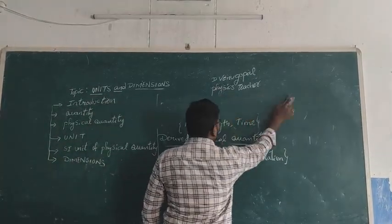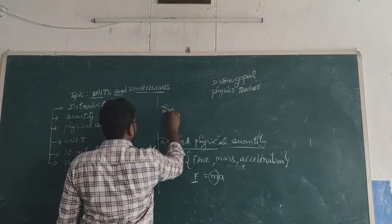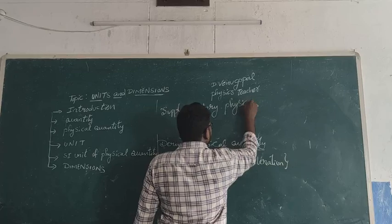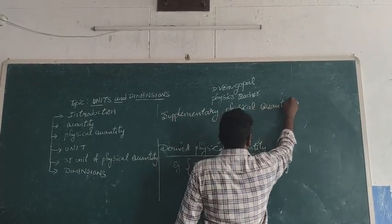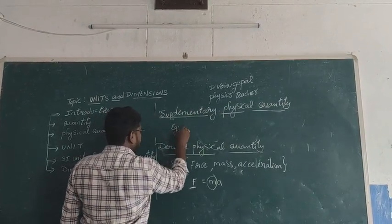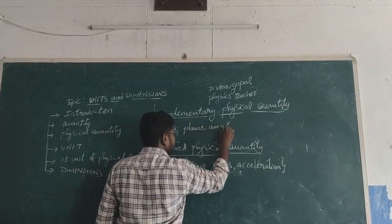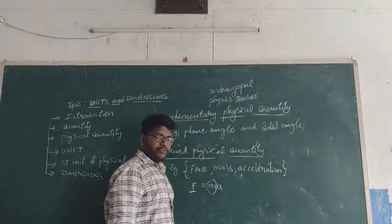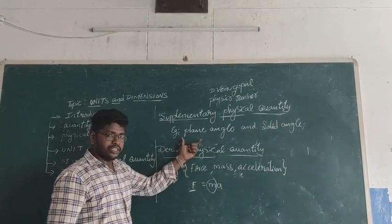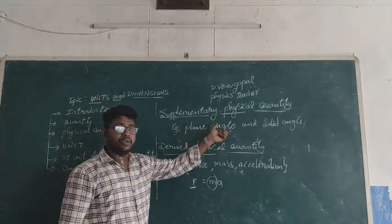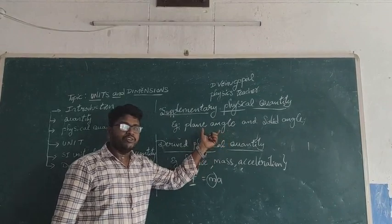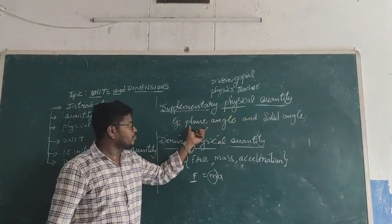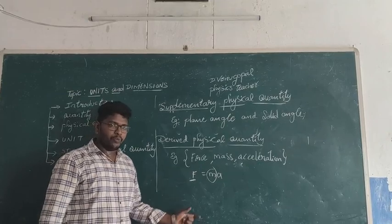Last but not least, supplementary physical quantity. Examples are plane angle and solid angle. The quantity which depends upon the supplementary angles is called a supplementary physical quantity. Examples are plane angle and solid angle. I hope you understand.